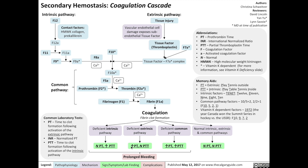The prothrombin time does not detect factor 8, 9, or von Willebrand factor. Often the PT is reported as an INR — the international normalized ratio — which is the ratio of actual time to clot formation to the normal or baseline time to clot formation. A higher INR means thinner blood.